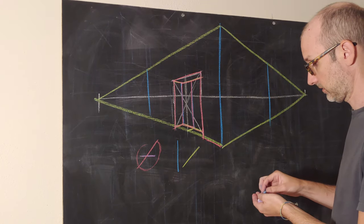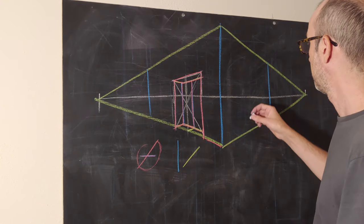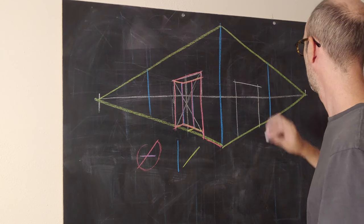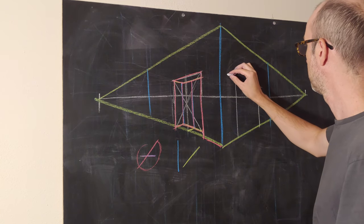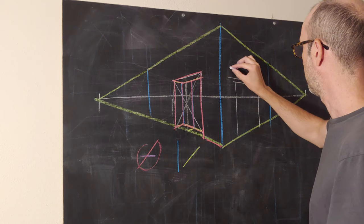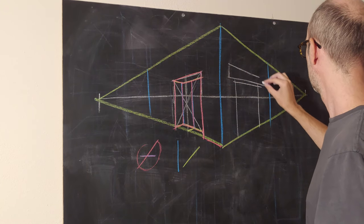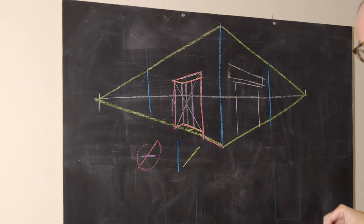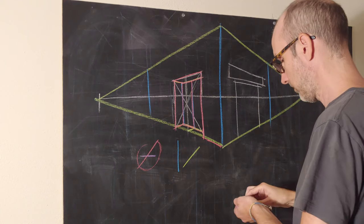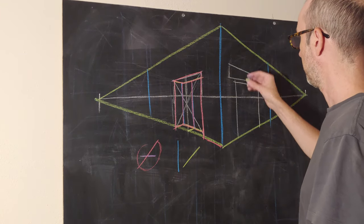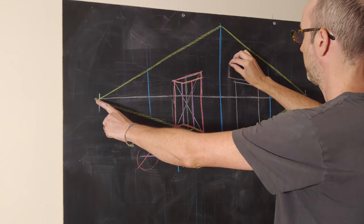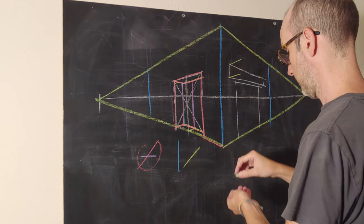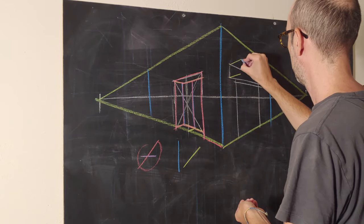Now let's do an outset. If we want to do this door and put an awning over it, we can take our awning and sketch it out by placing it onto the side of the plane. Now we want to outset it — we want to pull these out. Remember, we're pulling out by going from the vanishing point, so we pull from the vanishing point, then drop our vertical.